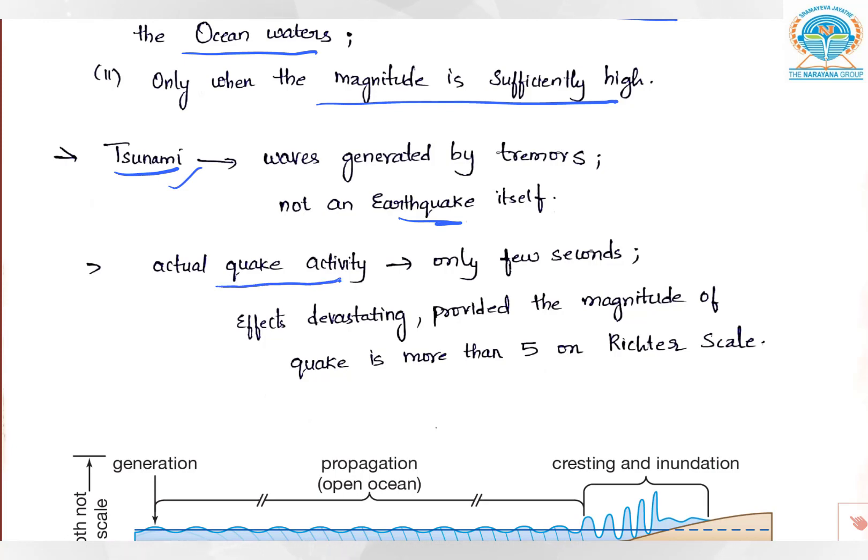In fact, the quake activity will last only for a very few seconds. But if the magnitude is more than 5 on Richter scale, it can cause very devastating effect—some huge waves that can travel very long distances. If it is more than 5, it results in tsunami.